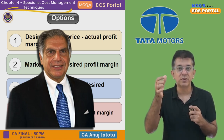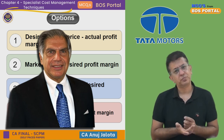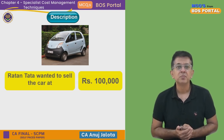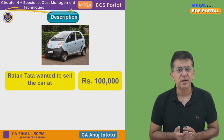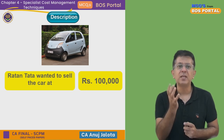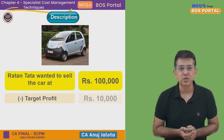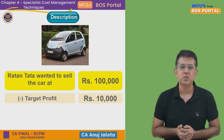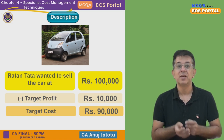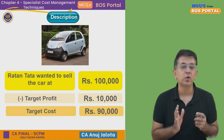In target costing, you don't think of the product first — you think of the price at which you want to sell it. Ratan Tata thought: I want to sell a car at one lakh rupees. He also thought about profit — his target profit was ten thousand rupees. This is called target profit. So out of one lakh, ten thousand should be profit, meaning he wanted to produce the car at ninety thousand rupees — this is called target cost.